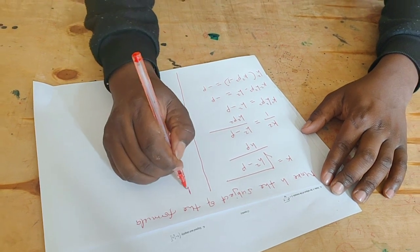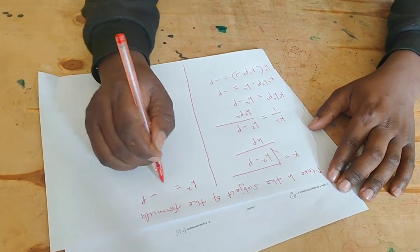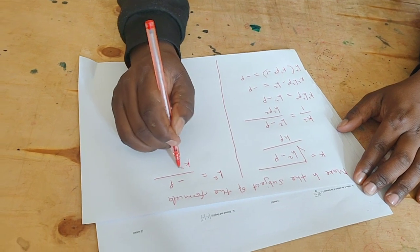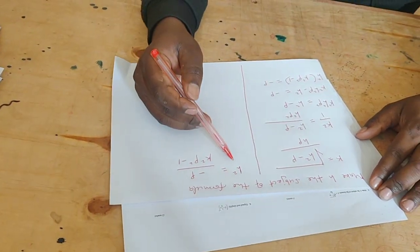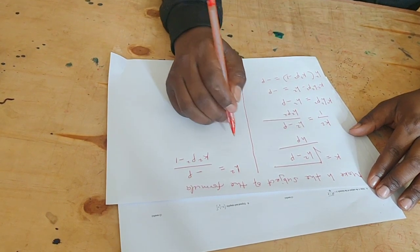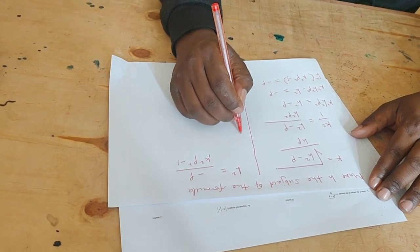That is, h squared equals negative p, all over k squared p squared minus one. Because this is h squared and we are looking for h alone, we shall find the root on both sides.